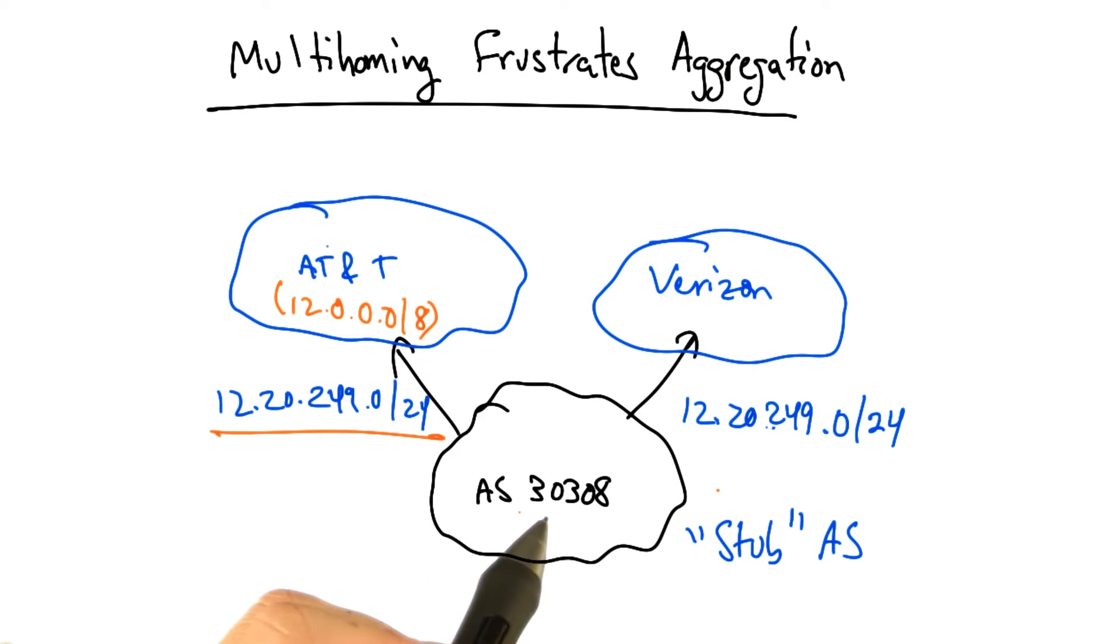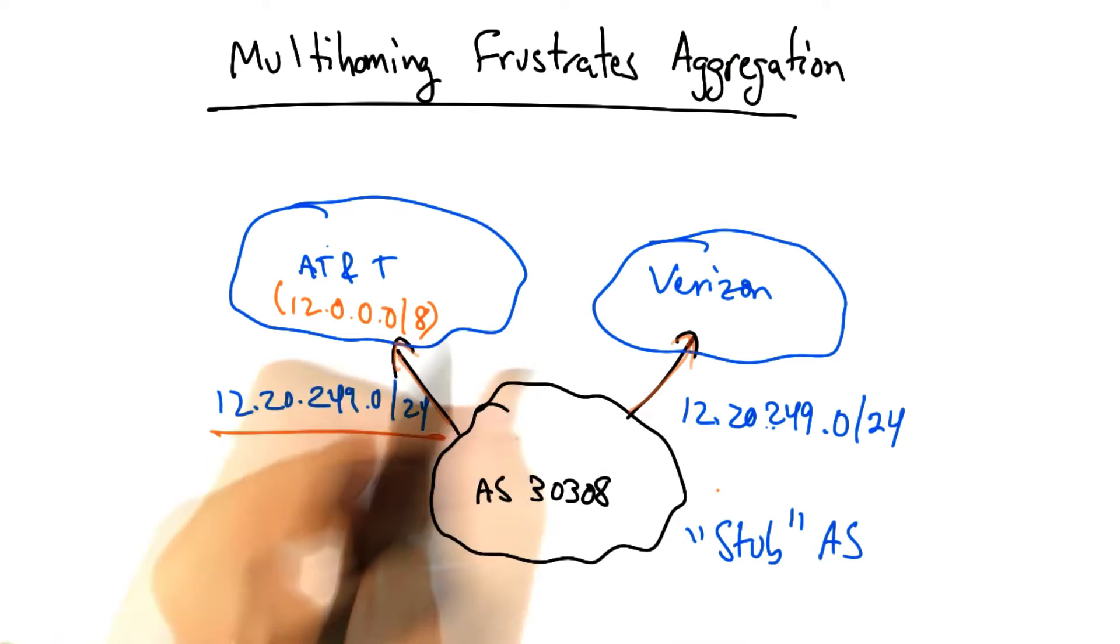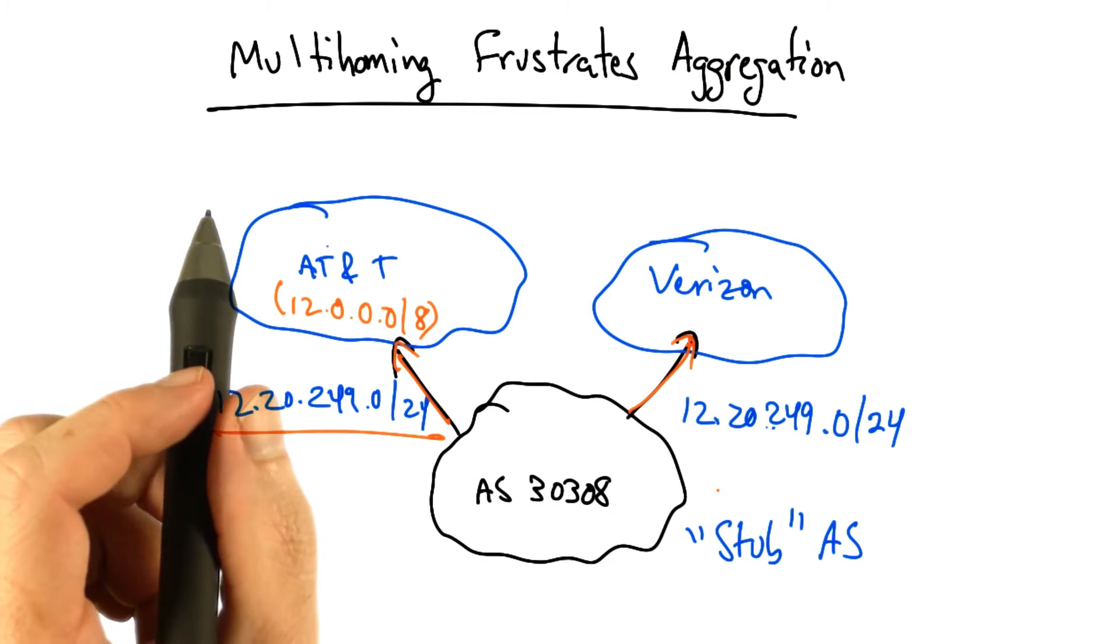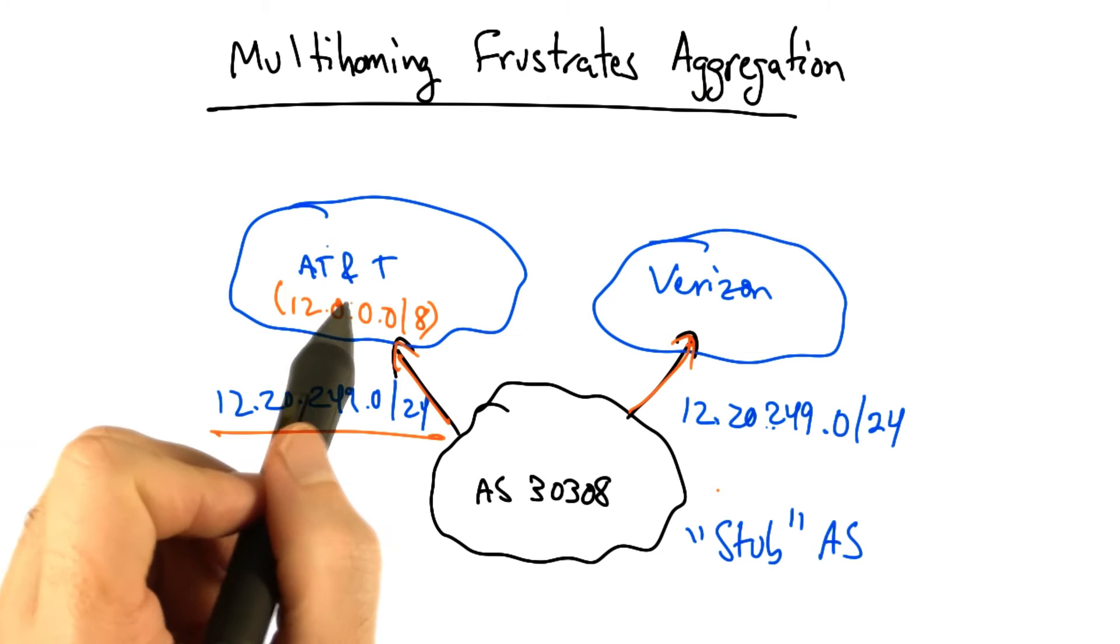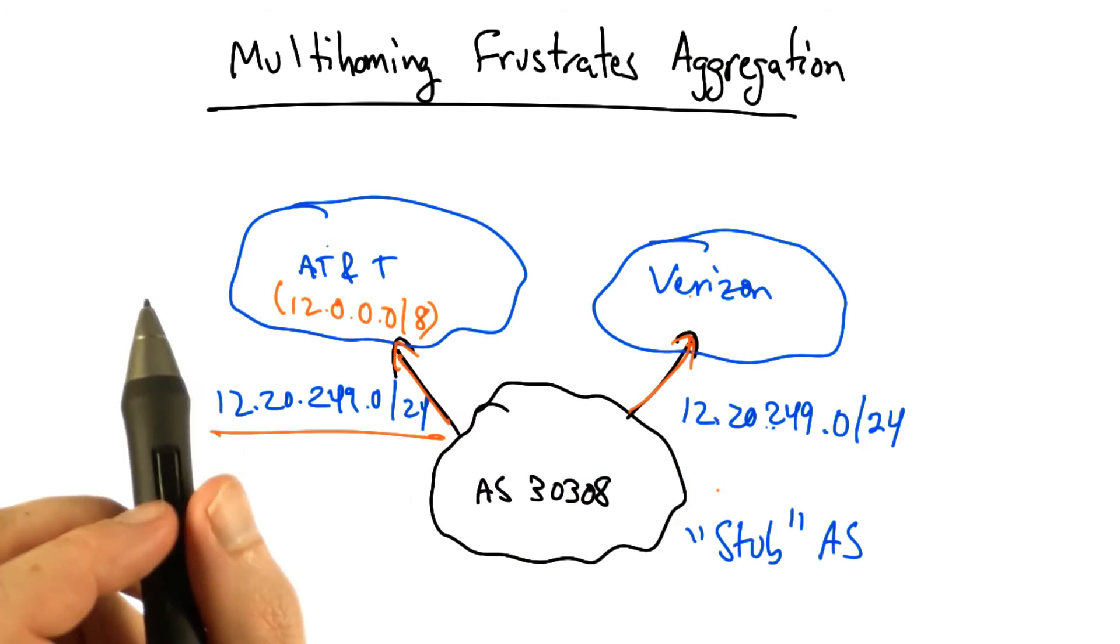Now in this case, AS30308 wants to be multi-homed. In other words, it wants to be reachable by two upstream internet service providers. In this diagram, the two internet service providers are AT&T and Verizon.